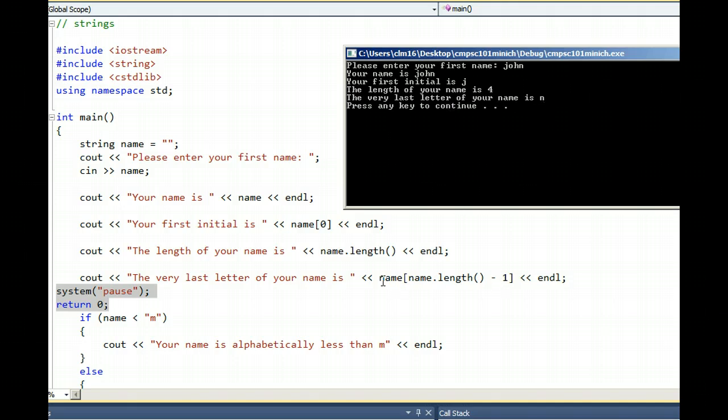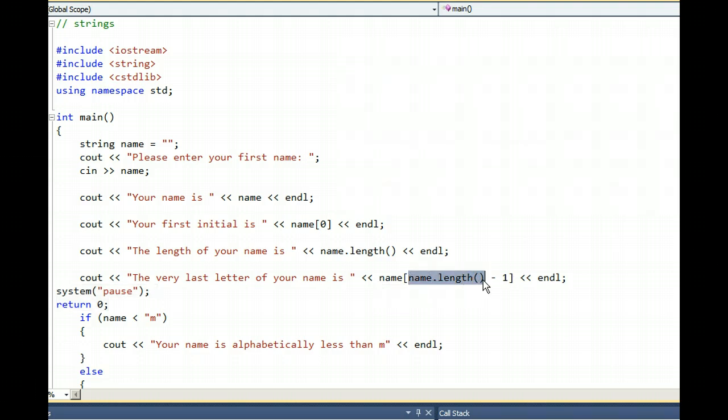Look at the notation here in this cout statement. The length of the name is obtained by typing name dot length. Name dot length is four in the case of John, and four minus one is three.